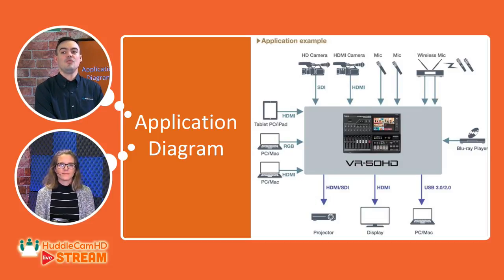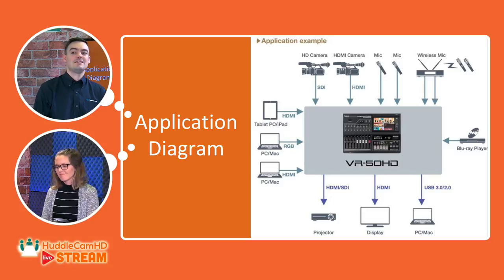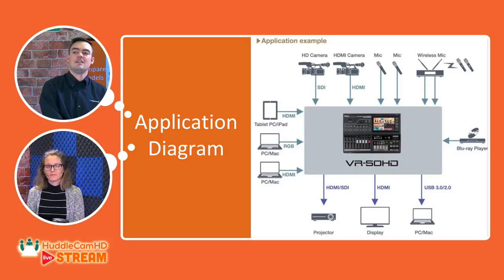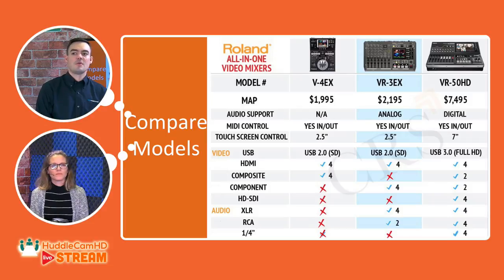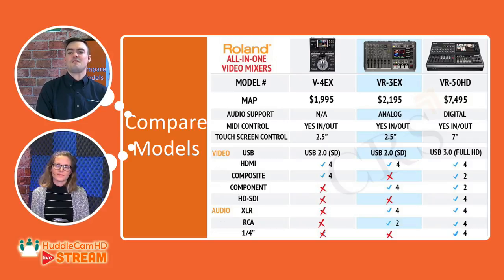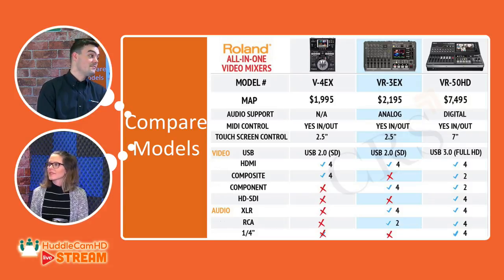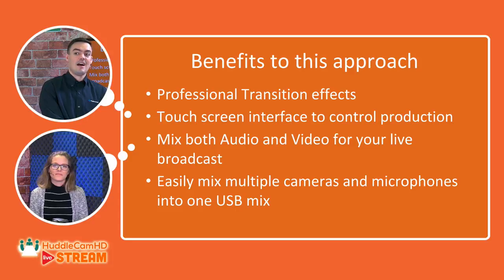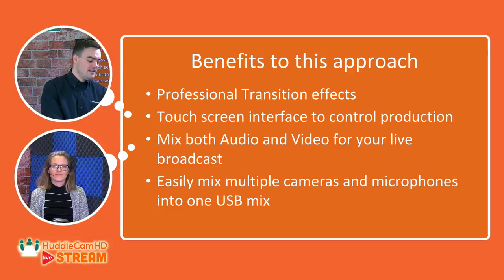Number three is to use a video mixer. This is the expensive way to do it, but it is a great option. Something like the Roland VR50 HD — there are also others on the market. They'll take multiple inputs: two HDMI, two composite, two component, four SDI inputs, and XLR inputs. You could have multiple cameras coming into this device, and it just plugs in via USB to your computer. The benefits include professional transitions, potentially a touchscreen interface, and mixing audio and video all in one easy mixer.